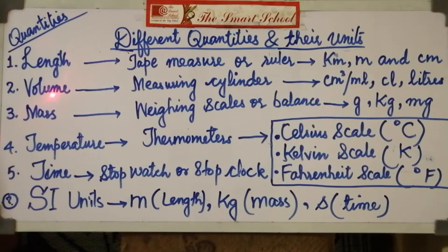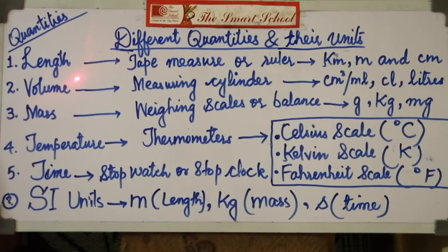The next quantity is volume. Volume is the space occupied by an object. The volume of a regular, even-shaped object such as a cube can be found by multiplying its length by its width by its height. However, to find the volume of an irregular or rough-shaped object, you must use a measuring cylinder.